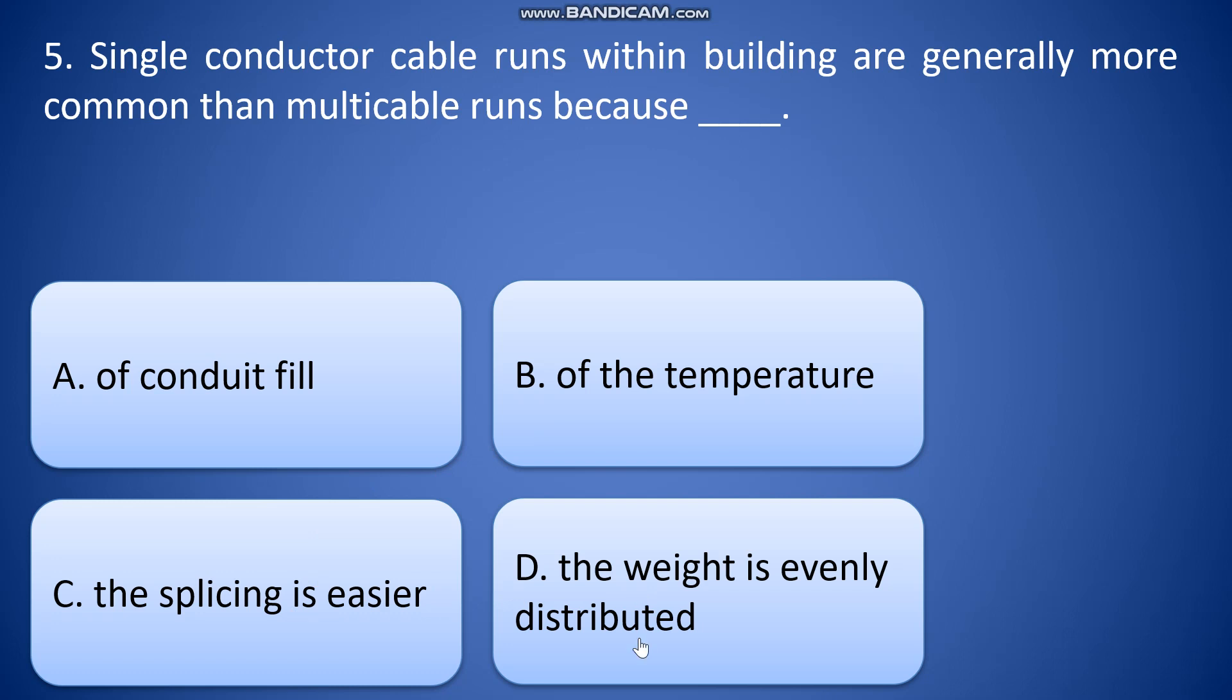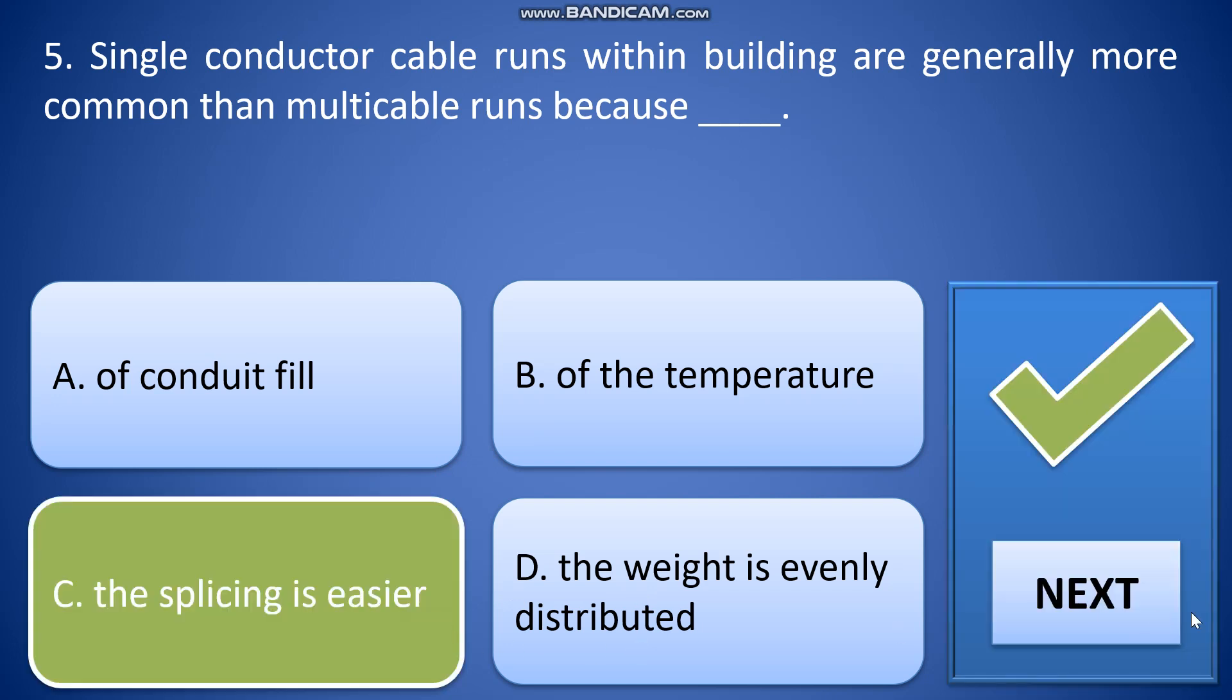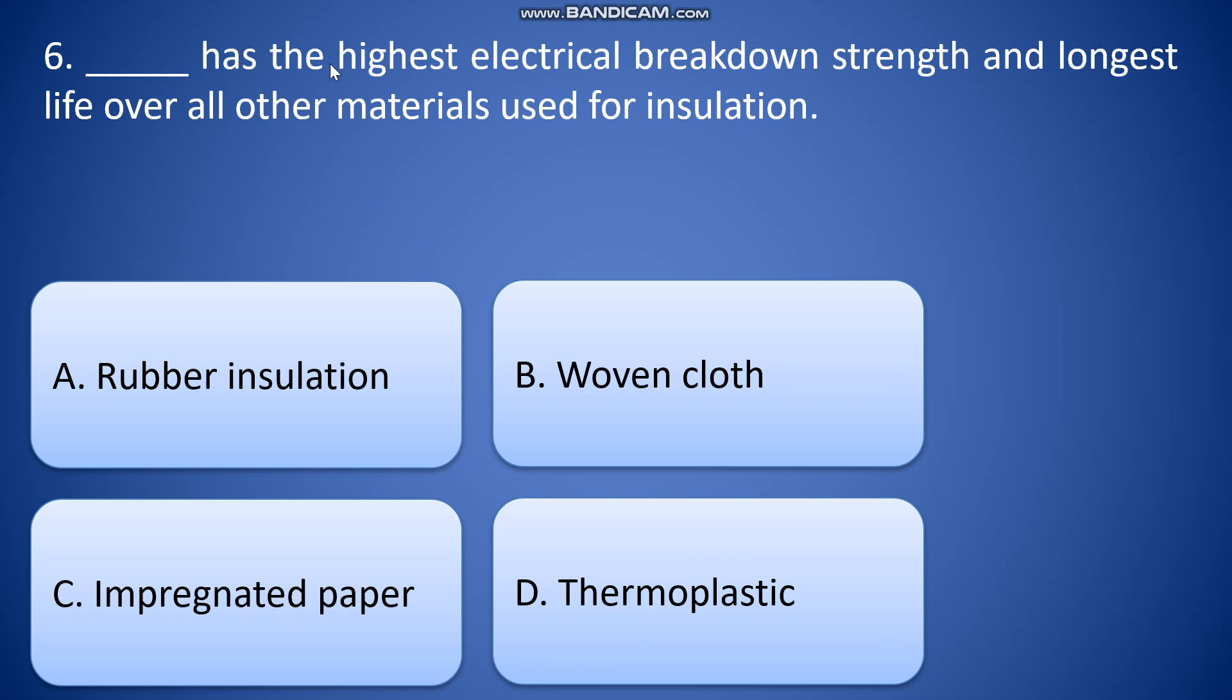Blank has the highest electrical breakdown strength and longest life overall other materials used for insulation. A: rubber insulation, B: woven cloth, C: impregnated paper, and D: thermoplastic. So the answer is C, impregnated paper.